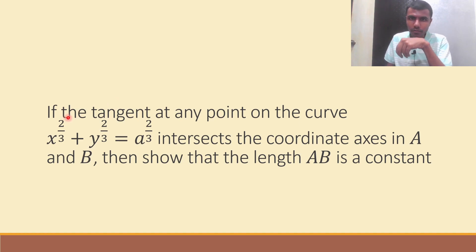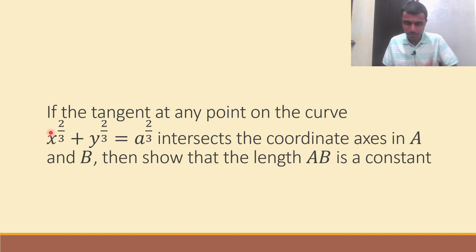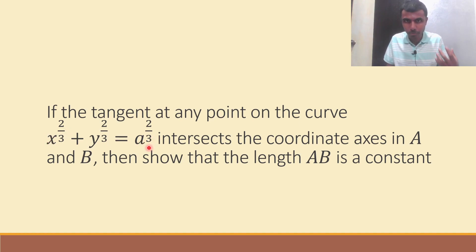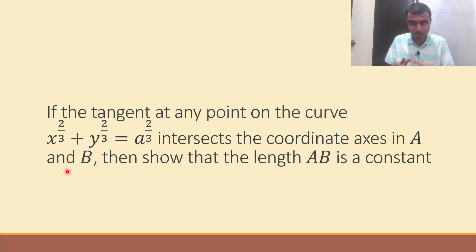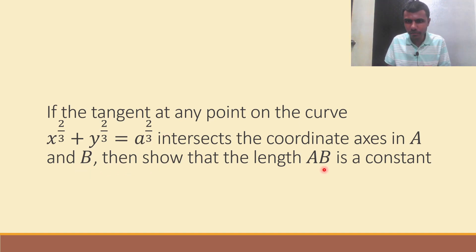Here we are given that if the tangent at any point on the curve x^(2/3) + y^(2/3) = a^(2/3) intersects the coordinate axes in A and B, we have to show that the length AB is constant.